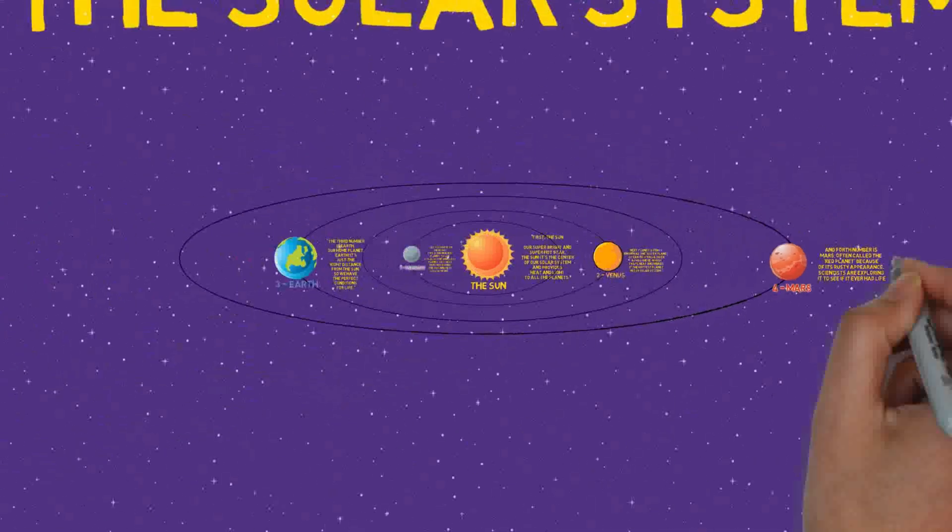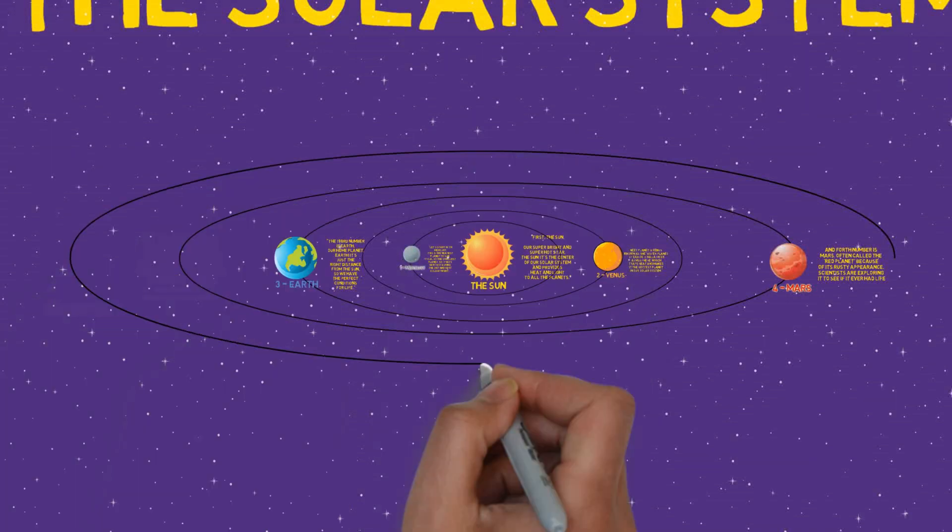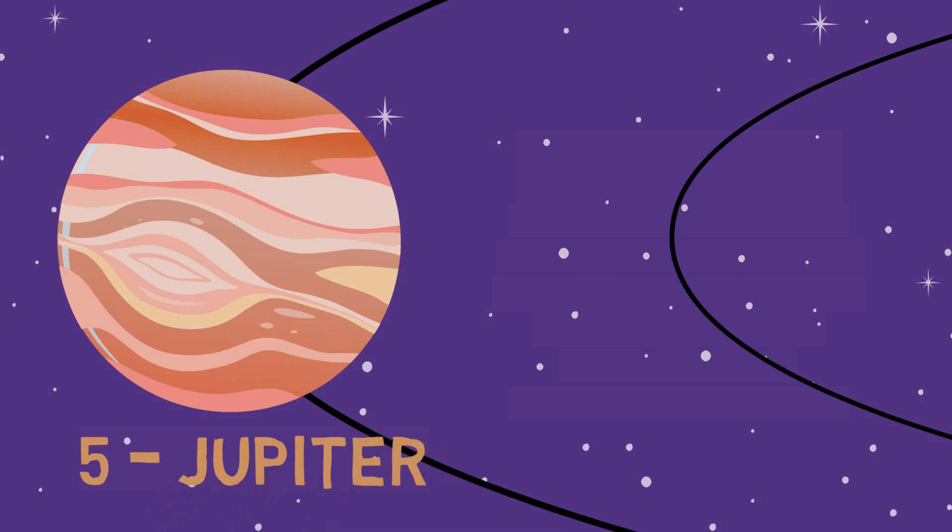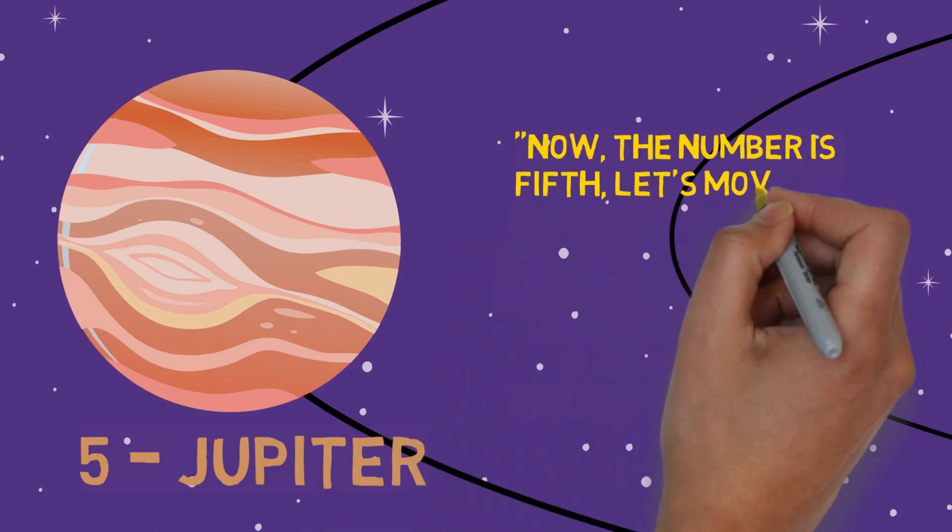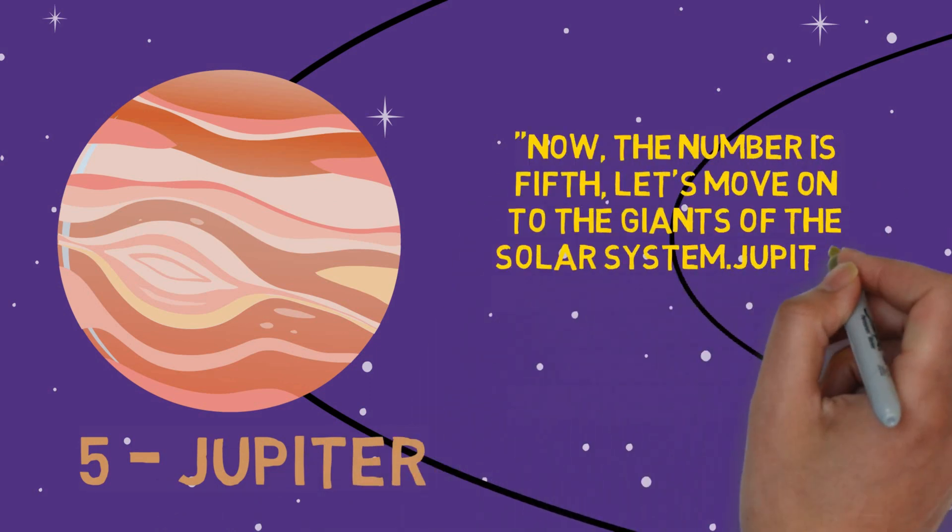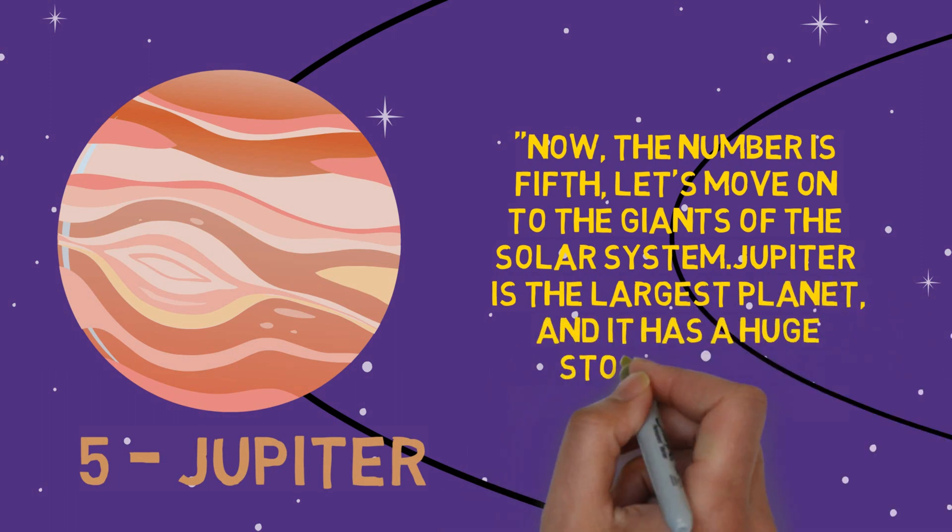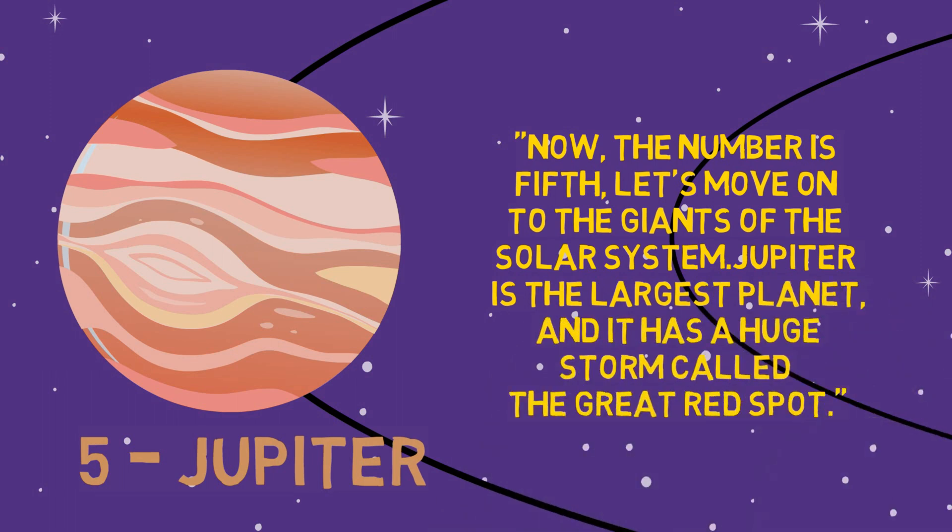Now the fifth number - let's move on to the giants of the solar system. Jupiter is the largest planet and it has a huge storm called the Great Red Spot.